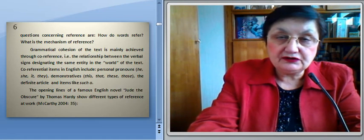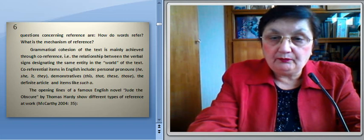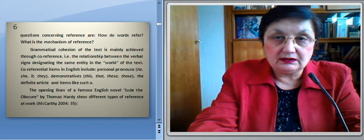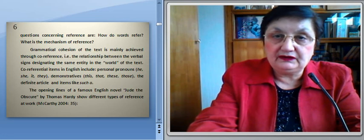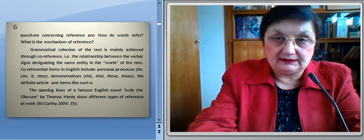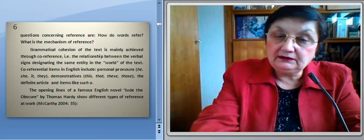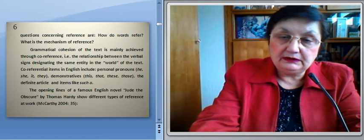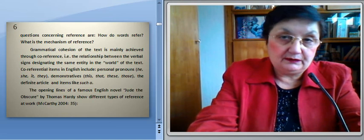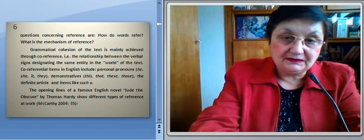Co-referential items in English include personal pronouns — he, she, it, they — demonstratives — this, that, these, those — the definite article, and items like 'such.' The opening lines of the famous English novel 'Jude the Obscure' by Thomas Hardy show different types of reference at work.